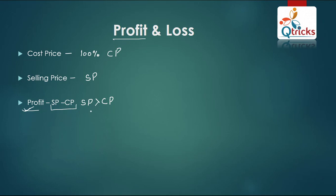The next term is loss. Loss is CP minus SP — it is just the reverse. When cost price is more and selling price is smaller, you have a loss. For example, if you purchased for 100 rupees and sold for 80 rupees, you have lost 20 rupees. In a loss condition, CP is always bigger than SP.